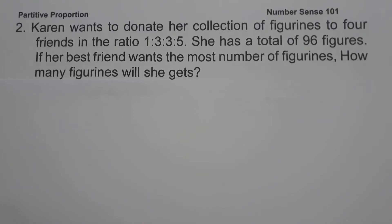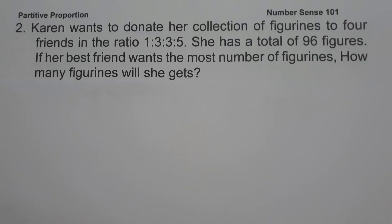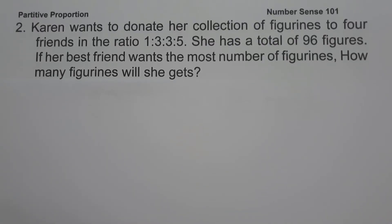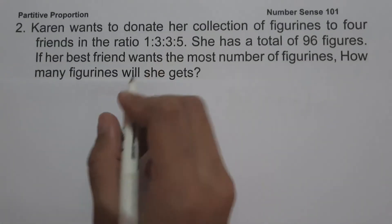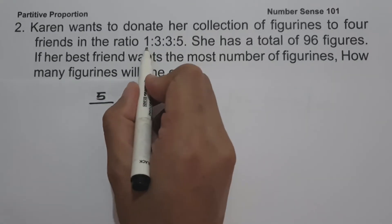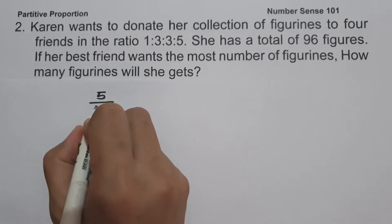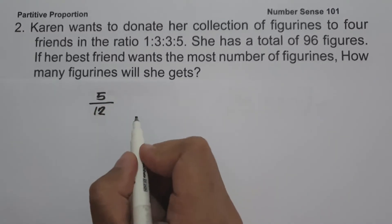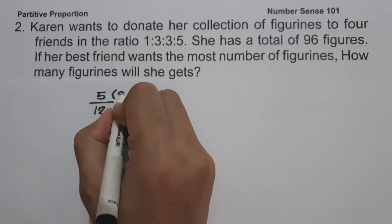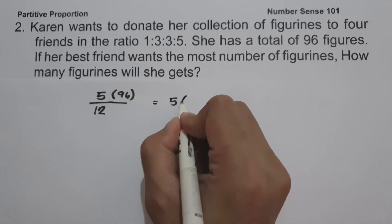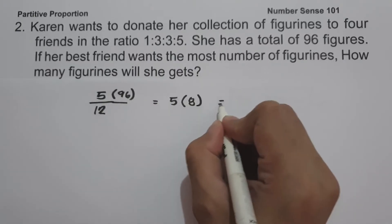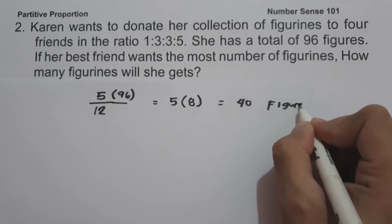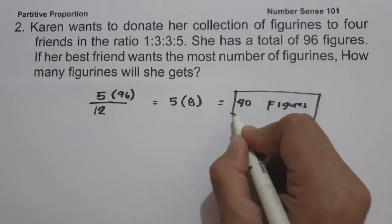On example number 2, Karen wants to donate her collection of figurines to 4 friends in the ratio 1 is to 3 is to 3 is to 5. She has a total of 96 figurines. If her best friend wants the most number of figurines, how many figurines will she get? Since her best friend wants the most, we use the highest ratio, which is 5. The sum of the ratio is 1 plus 3 plus 3 plus 5, which is 12. So 5 over 12 multiplied by 96 — that is 96 divided by 12 equals 8, times 5 equals 40. So her best friend gets 40 figurines.